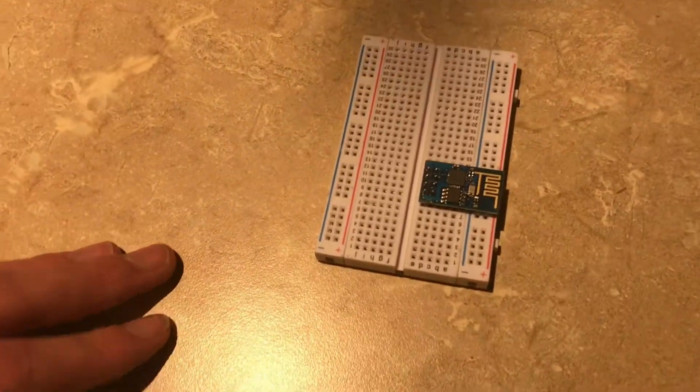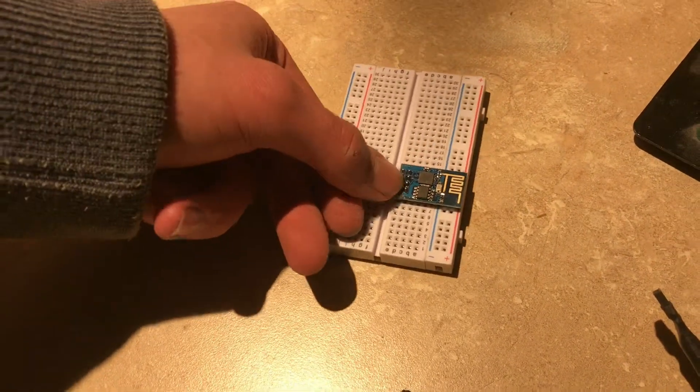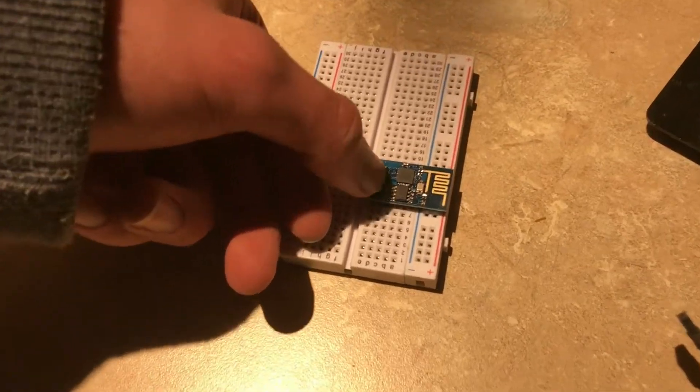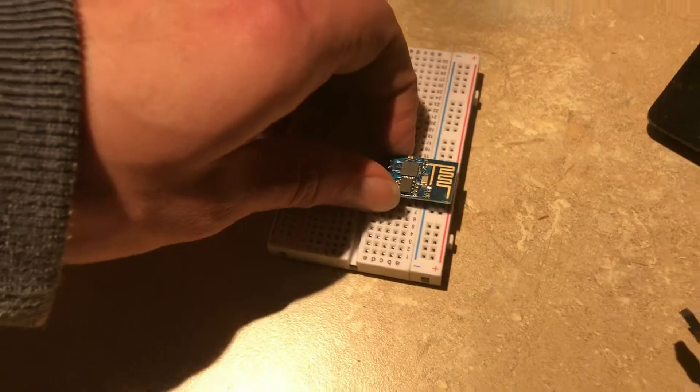you know on a breadboard all the rows are connected together so now you're shorting this row to the next one. You won't even be able to turn the device on.